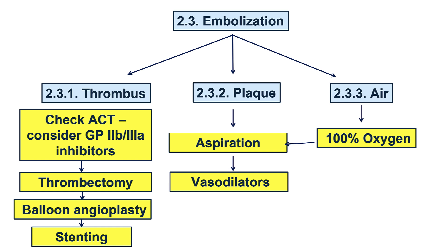In summary, thrombus and plaque embolization are potential causes of acute vessel closure or slow flow. It is critical to prevent it by maintaining adequate anticoagulation and giving vasodilators before atherectomy, or using an embolic protection device during saphenous vein graft interventions. If thrombus embolization occurs, ensure optimal anticoagulation, consider more aggressive intravenous antiplatelet agents, perform thrombectomy, then balloon angioplasty and stenting if needed. If plaque embolization occurs, do not place a stent — that would worsen distal embolization. Instead, perform aspiration and administer vasodilators.